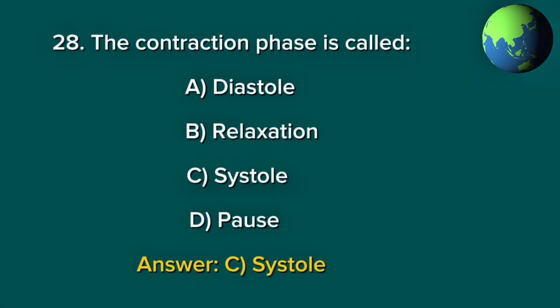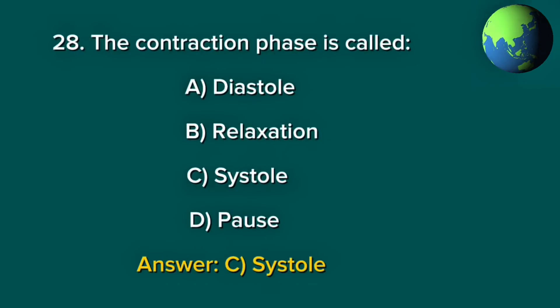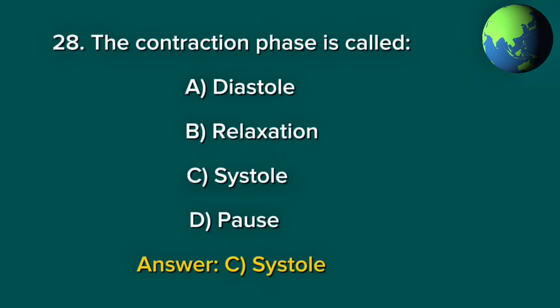Question 28. The contraction phase is called: A. Diastole. B. Relaxation. C. Systole. D. Pause. Answer: C. Systole.